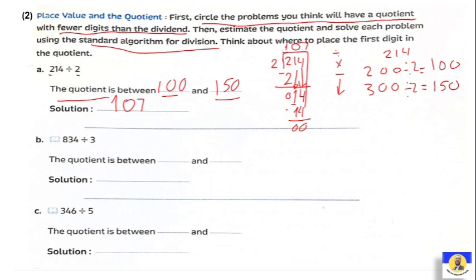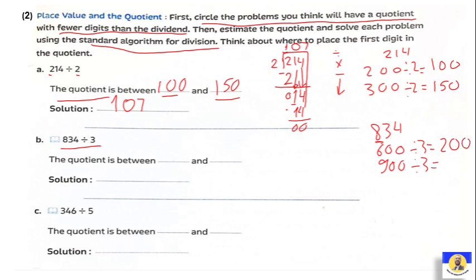Next, Letter B: 834 divided by 3. The first digit is 8, and 8 is greater than 3 so we can divide. For estimation, 834 is between 600 and 900 in the table of 3. So 600 divided by 3 equals 200, and 900 divided by 3 equals 300. The quotient will be a number between 200 and 300.